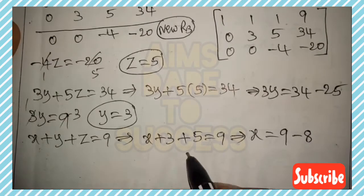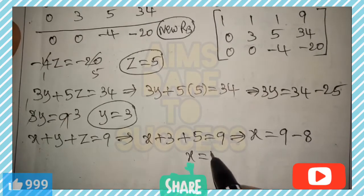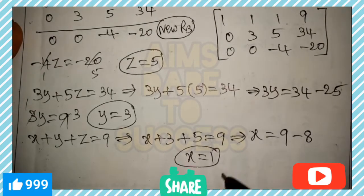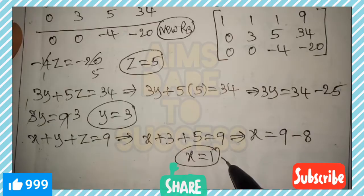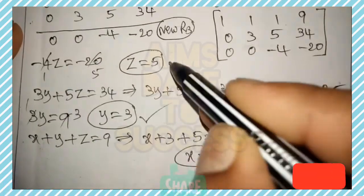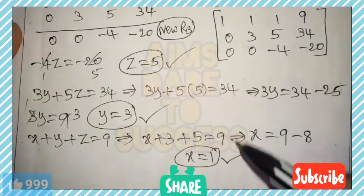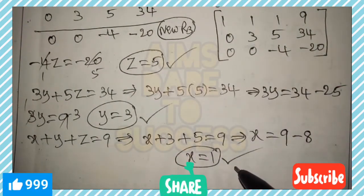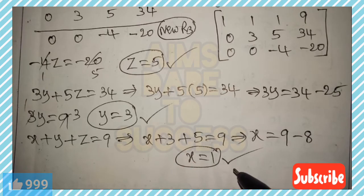x + 8 = 9, so x = 1. Therefore, x = 1, y = 3, z = 5 are the required answers for this question. Please subscribe to our channel, support us, and share with your friends.